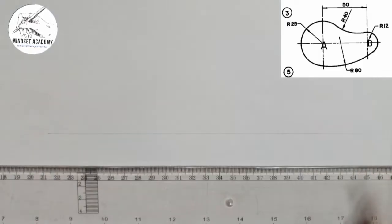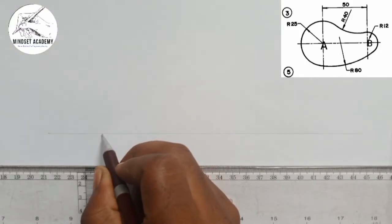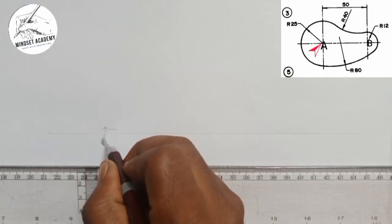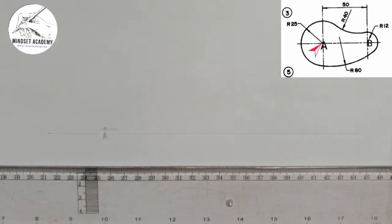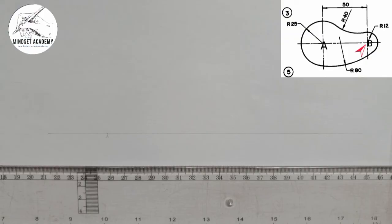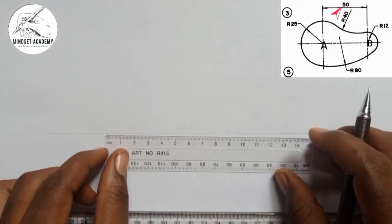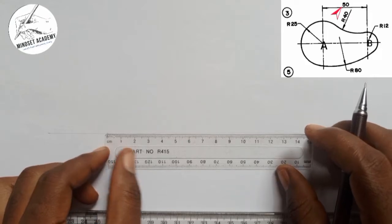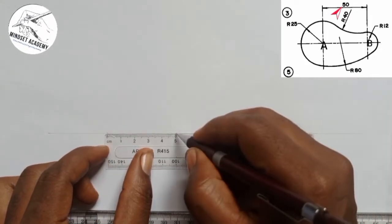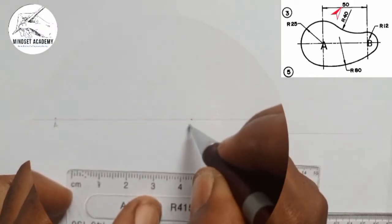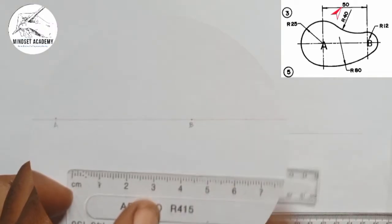I am going to pick a point on that line — this point should be called point A. If you notice, the distance from this center to the other center is given as 50. So I am going to measure 50 from point A to get point B.